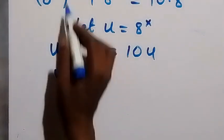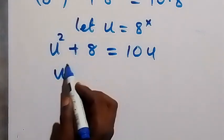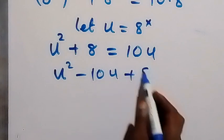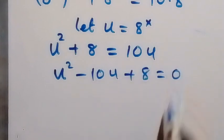square. u square minus 10u plus 8 now is equals to 0.